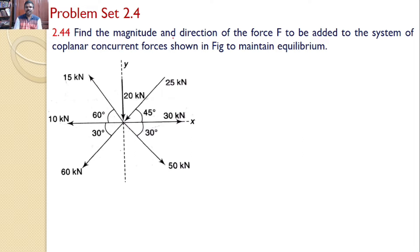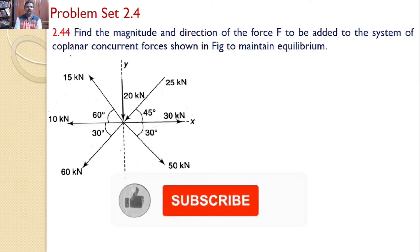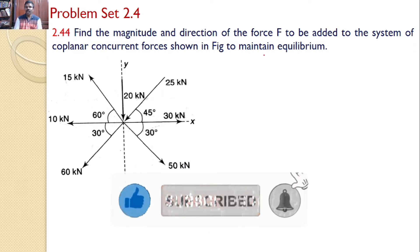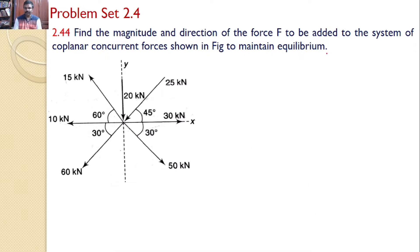Find the magnitude and direction of the force F to be added to the system of coplanar concurrent forces shown in the figure to maintain equilibrium. So this is a problem of equilibrium, not to find the resultant. Please make a note of that before going to the solution.